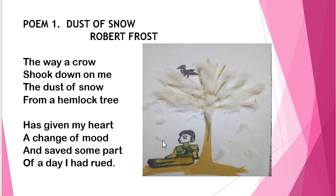When the dust of snow — the snow particles — fell upon the poet, the mood of the poet changed. That's why he says, 'has given my heart a change of mood.' The poet's mood changes because he was feeling very melancholic, sorrowful, and lost in depressive thoughts. And when the crow shook down the dust of snow upon him, his heart got a change of mood and it changed into an optimistic one.